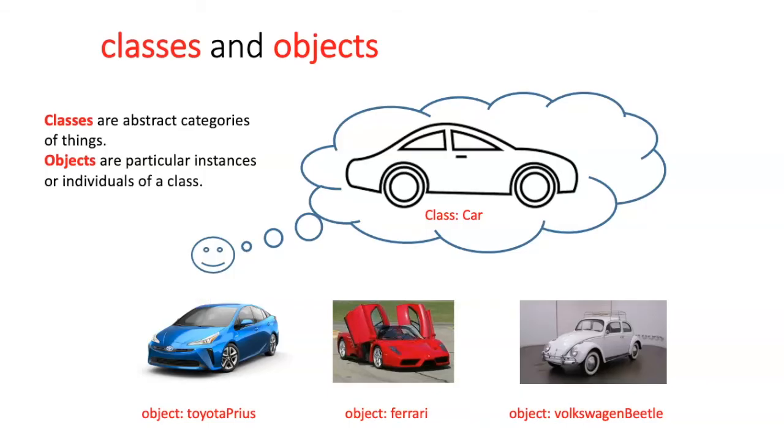In object-oriented programming, a class is an abstract category of things. Within that abstract category, you can have particular instances of that class. These particular instances are called objects, or they're individuals of the class.